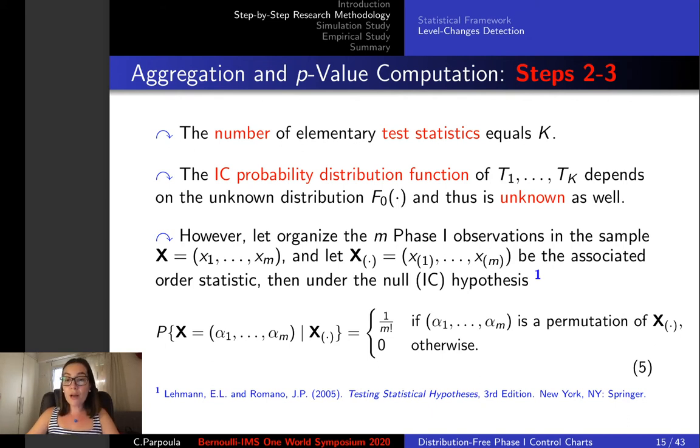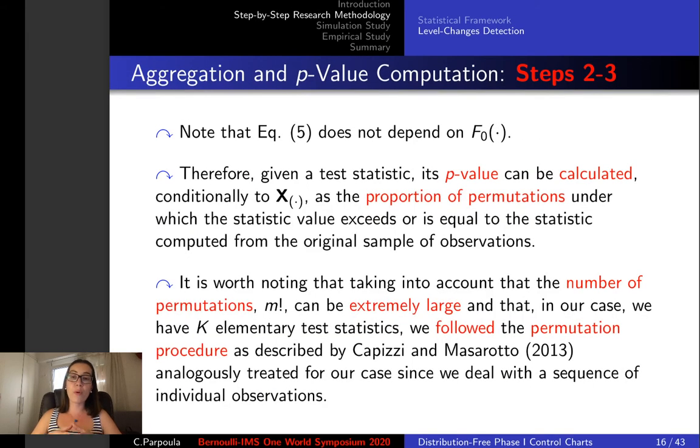We know that under the null hypothesis relation 5 holds. Note here that alpha 1, alpha 2, alpha m, this vector is a permutation of the associated order statistic and it does not depend on the in-control unknown distribution function. In this way we could compute the associated p-value based on the proportion of permutations.